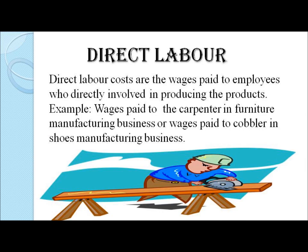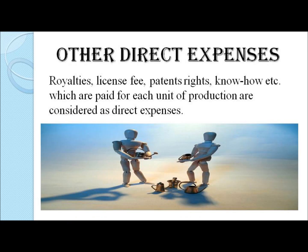Next, we record direct labor, which is the cost of wages paid to the employees who are directly involved in production — for example, the wages of the carpenter for a furniture manufacturing business. Next, we record all the direct expenses incurred in producing the product, like royalty, license fees, patent rights, and know-how. These are all the direct expenses required when we produce a product.